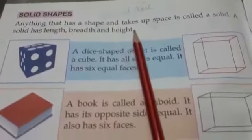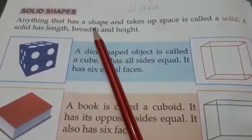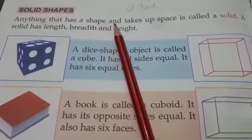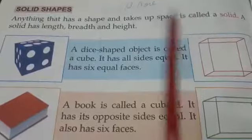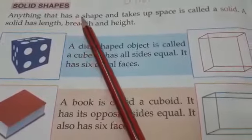Next is solid shapes. Anything that has a shape and takes up space is called a solid. Koi bhi cheez jiski shape hoti hai aur wo sthan gharti hai, yani kisi jagah par kuch space leti hai, usko hum solid bolte hain. Solid has length, breadth, and height. Iski length, breadth, height bhi hoti hai.